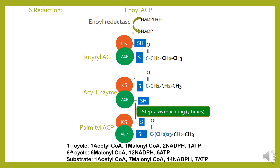Agar ek cycle run karne ke liye acetyl-CoA ka 1 molecule, malonyl-CoA ka 1 molecule, aur 2 NADPH aur 1 ATP required hain, to agar yeh cycle 6 times aur run kare gi to hamen step number 2 se 6 ke liye malonyl-CoA ke 6 molecules, 12 NADPH, aur 6 ATP ke molecules chahiye honge. Agar cycle 1 aur cycle 6 ka hum overall sum lein to total substrates: 1 acetyl-CoA, 7 malonyl-CoA, 14 NADPH, aur 7 ATP required hain poori fatty acid synthesis cycle ke liye.